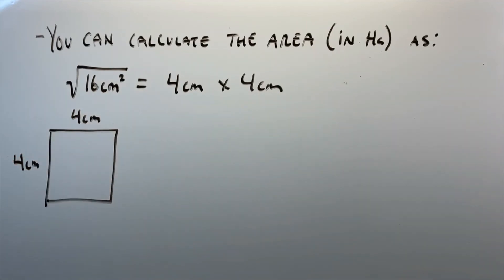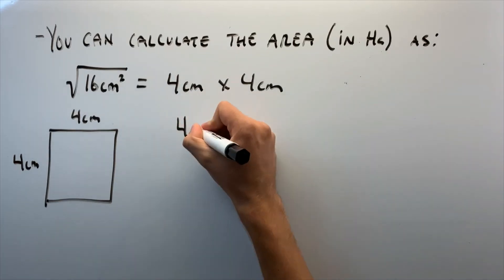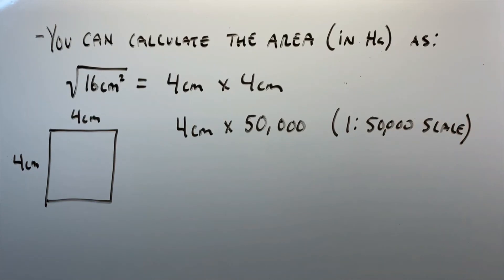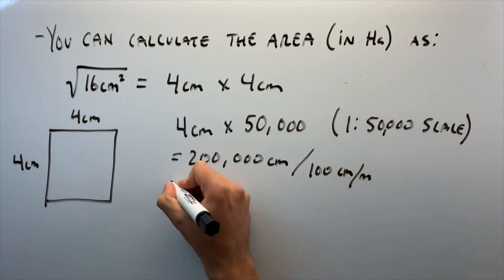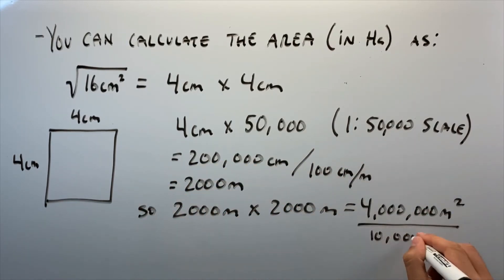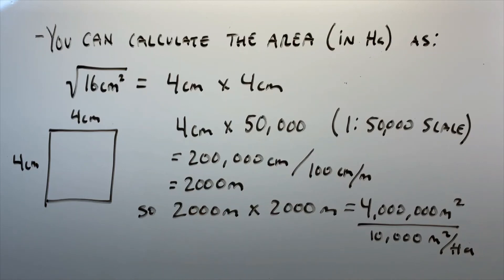To calculate that, we take the square root of 16 cm², giving a square area of 4 cm × 4 cm. Multiplying 4 cm by the scale of 1 to 50,000 gives 200,000 cm. So 200,000 cm × 200,000 cm = 4,000,000 m² — and dividing by 10,000 m² per hectare gives us 400 hectares.